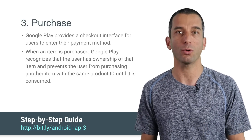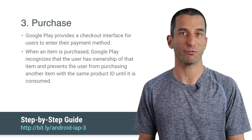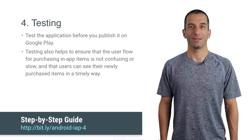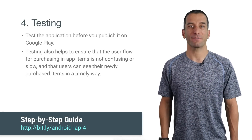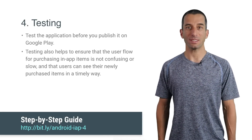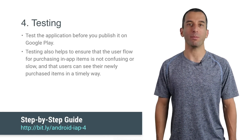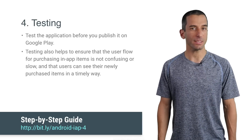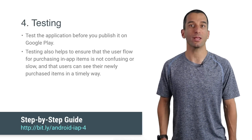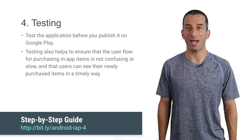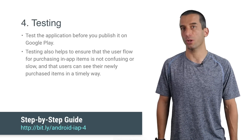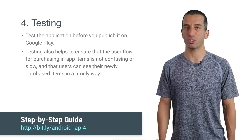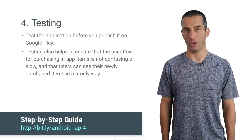You can also query Google Play to quickly retrieve the list of purchases that were made by the user. To ensure that in-app billing is functioning correctly, you should test the application before you publish it on Google Play. Early testing also helps to ensure that the user flow for purchasing in-app items is not confusing or slow, and that users can see their newly purchased item in a timely way.